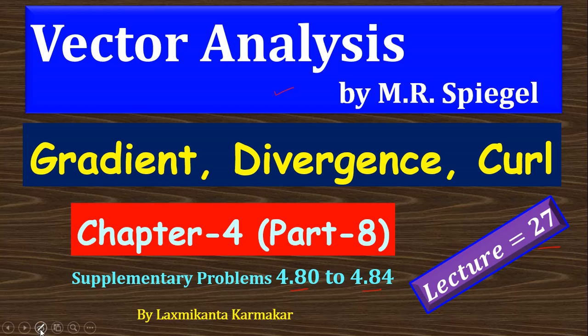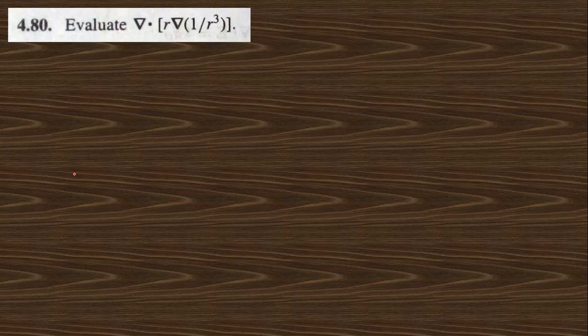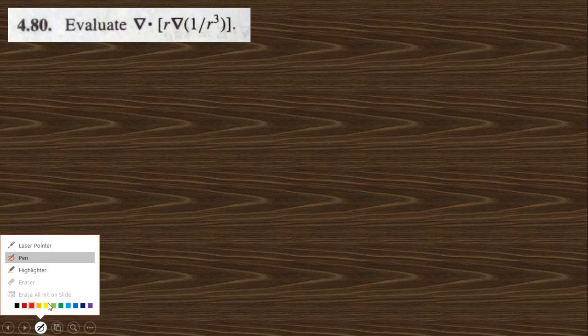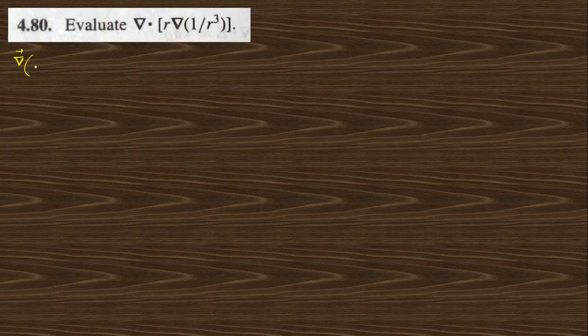Let us go to the first question, 4.80. Evaluate this. First, I want to find out separately the gradient of 1/R³. The formula is simply the derivative of this, which gives minus 3 times R to the power 4, with R̂. R̂ means R vector divided by R. So this can be written as minus 3 by R to the power 5, times R vector.